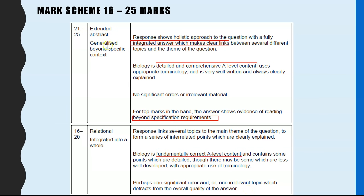The top box, 21 to 25: the response shows a holistic approach to the question with a fully integrated answer which makes clear links between several topics and the theme of the question. This means you need to have really picked your four to six topics and clearly linked and explained at A-level standard why each of those topics is essential in biology or in organisms.